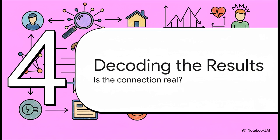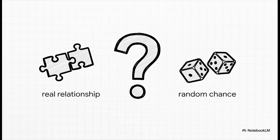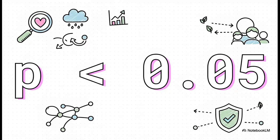So a researcher runs the numbers and checks the assumptions — now what? How do they actually decode the results and know for sure that the connection they found is real and not just some random coincidence in the data? They get a summary called an ANOVA table. It's built to answer one question: does our model do a better job of predicting the outcome than pure random chance? The number to look for is the F value — a high F value means our clues are probably important. That leads us to the P value, which answers the million-dollar question: what's the probability that the relationship we're seeing is just a fluke? Researchers hope for a tiny P value; the gold standard is less than 0.05, meaning there's less than a 5% chance the result is random luck. That's when scientists feel confident enough to say the finding is statistically significant.